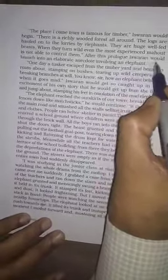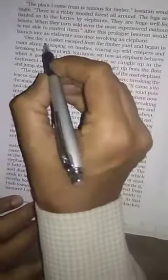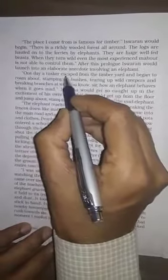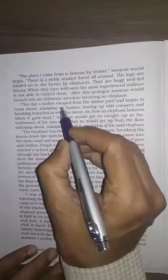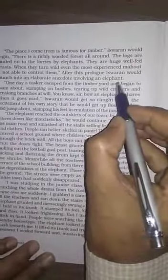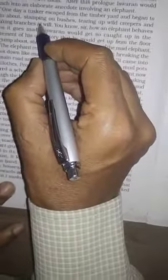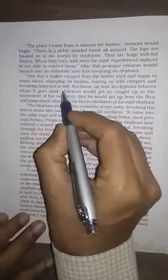After this prologue, after this preface, Iswaran would launch, means Iswaran started into an elaborate anecdote, means he started a detailed story related to elephant. It is a matter of one day. One day, a tusker, tusker means a male elephant, escaped from the timber yard and began to, means he started to wander about. He was stomping on bushes, tearing up wild creepers and also breaking the branches according to his wish.